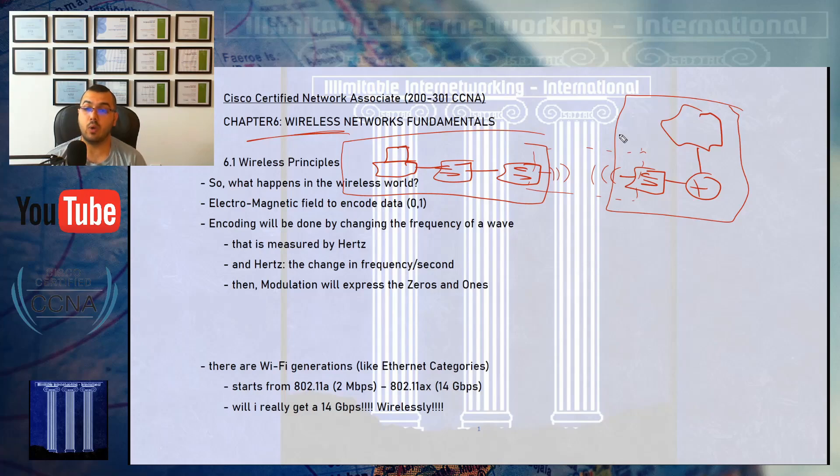But why is this chapter big? Because I must mention everything, and Cisco has mentioned a lot in their blueprints, including some configurations. So we will use Packet Tracer a bit in this chapter. There will be Packet Tracer. I will show you how wireless network devices look like, how you can access them.